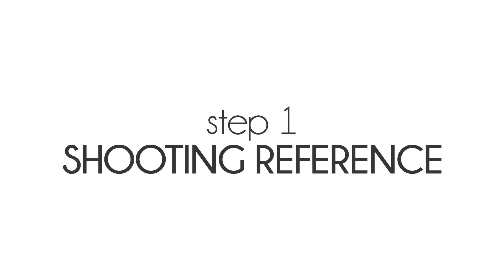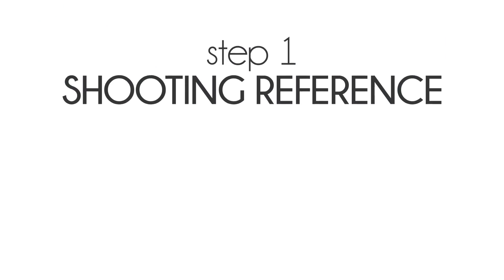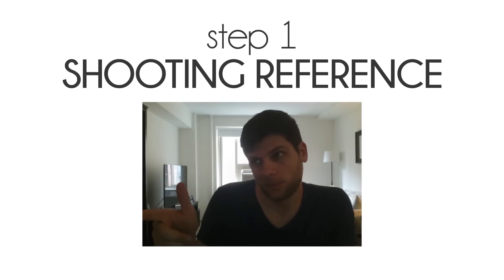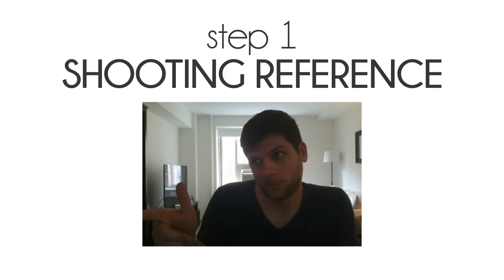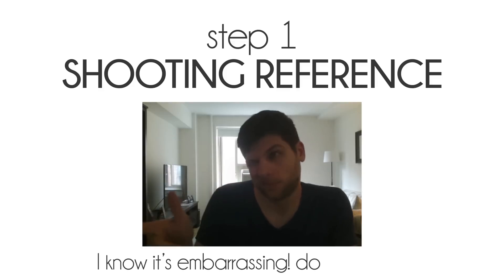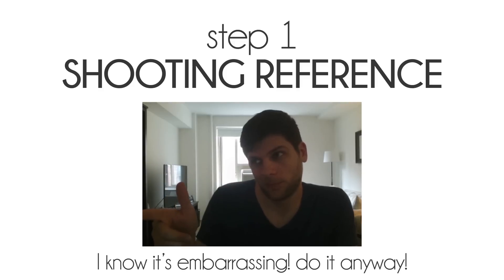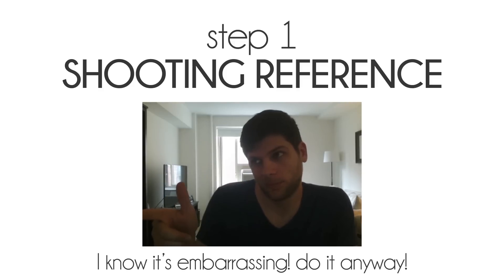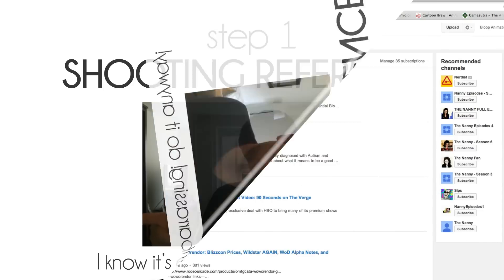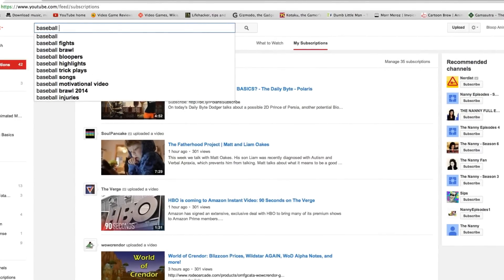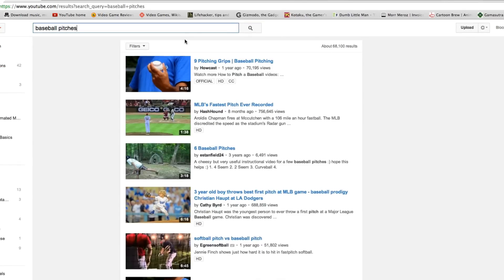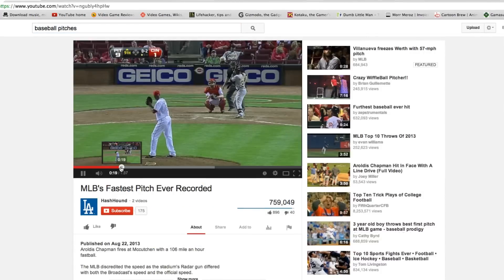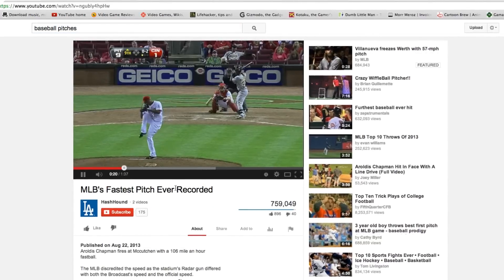Step one: shooting a reference video. This is a very important and overlooked step. People really think that they know how certain actions look like and how long they're going to take, but they are often wrong. Physical actions are something you need to analyze before starting to animate, especially if you're a beginner. If you have a shot of a guy throwing a baseball, you better YouTube some reference video of pitchers throwing balls. Don't assume you know what it looks like just because you've seen it before or did it yourself.